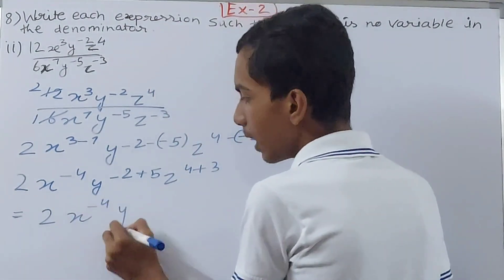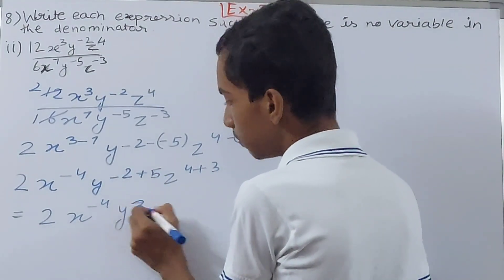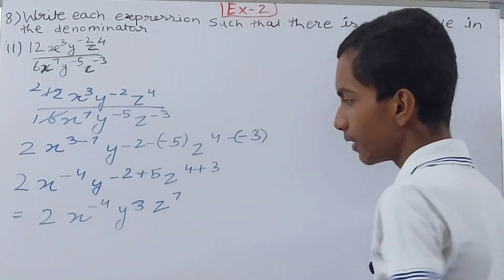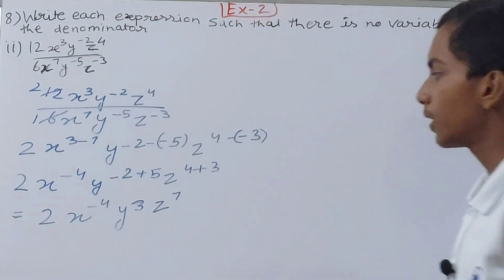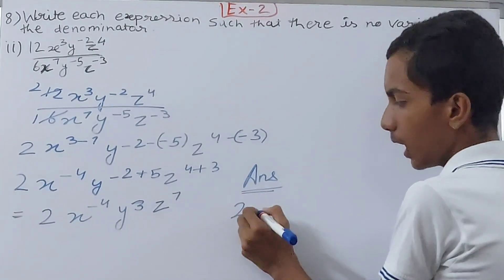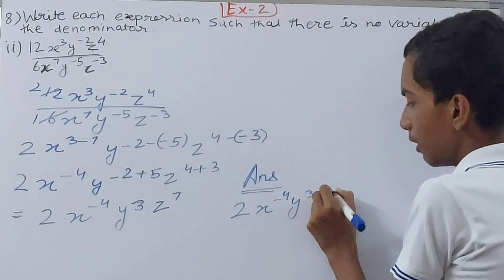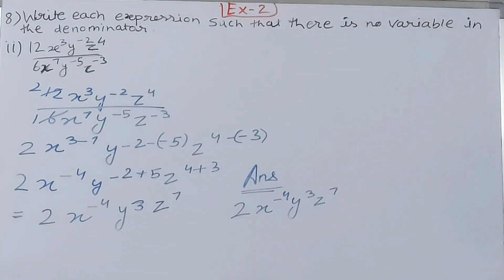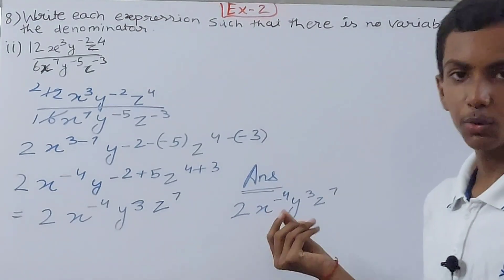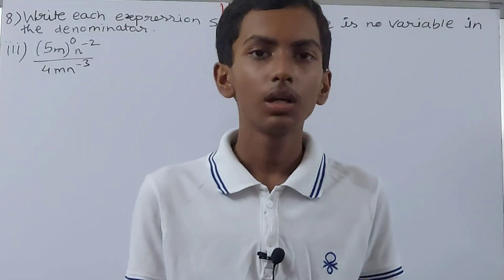So the answer is 2x^(-4) y^3 z^7. Keep in mind — do not convert the negative exponent of x to a positive exponent. That is the final answer for this part.